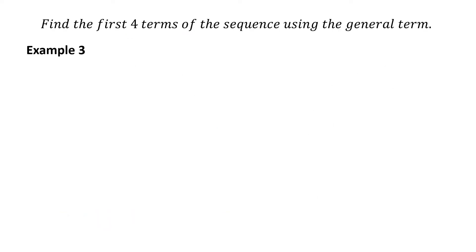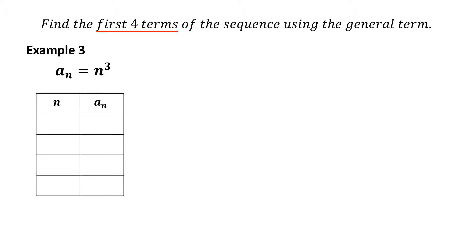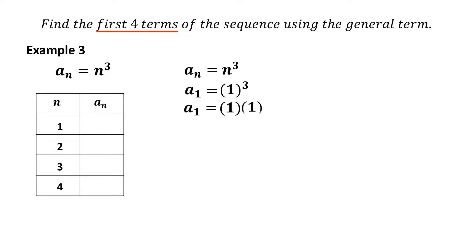For Example 3, the general term is a sub n equals n cubed. We assign n from 1 to 4. Finding the first term: substitute n equals 1, so a sub 1 equals 1 cubed, meaning 1 times 1 times 1, which equals 1. Therefore, the first term is 1.